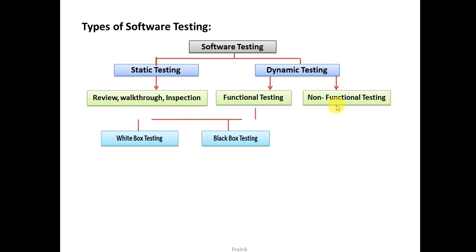Functional testing is categorized into two parts — this is where white box and black box testing come in. All coding-front checks are performed by white box testers, who are generally the developers. The method of performing white box testing is called unit testing. Black box testing is performed by testers who don't need to deal with the coding language directly, though it's good to have a fair idea of the programming language.